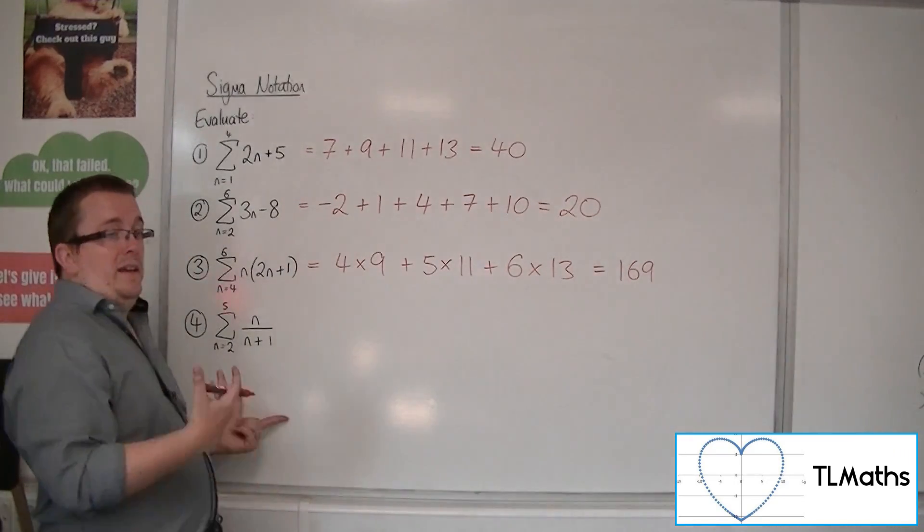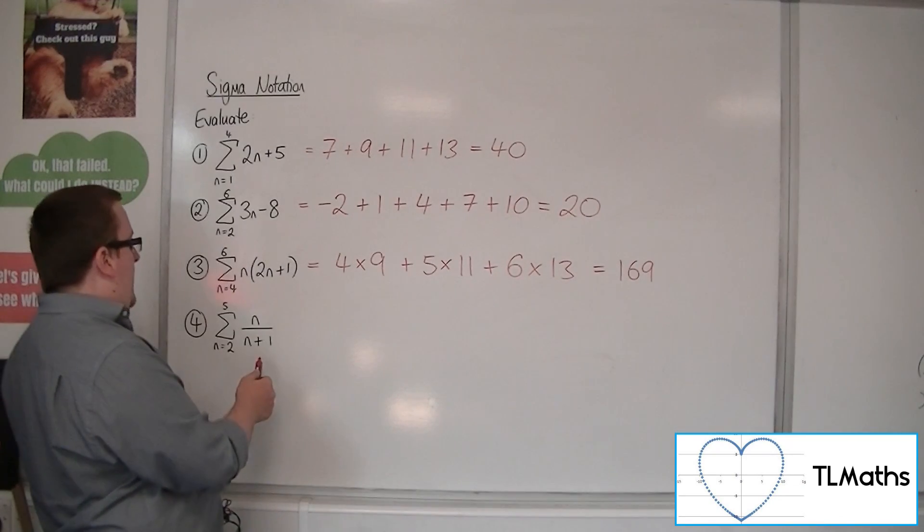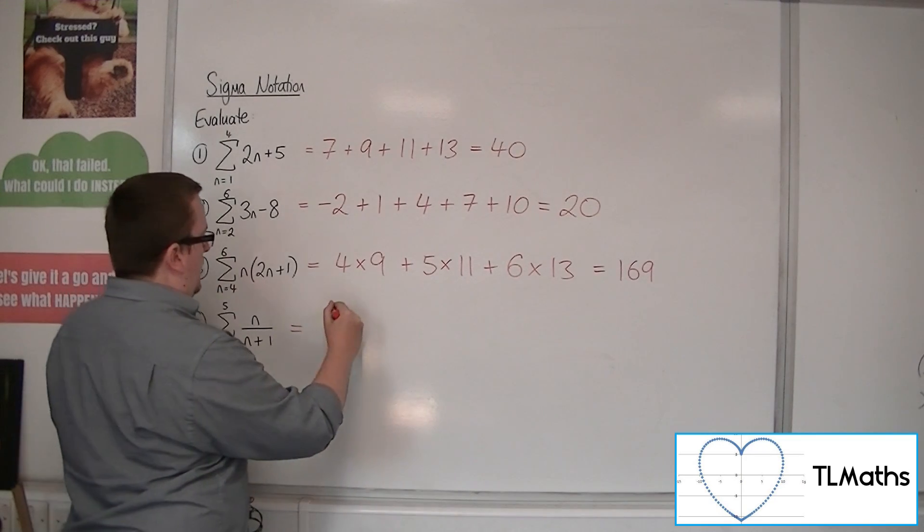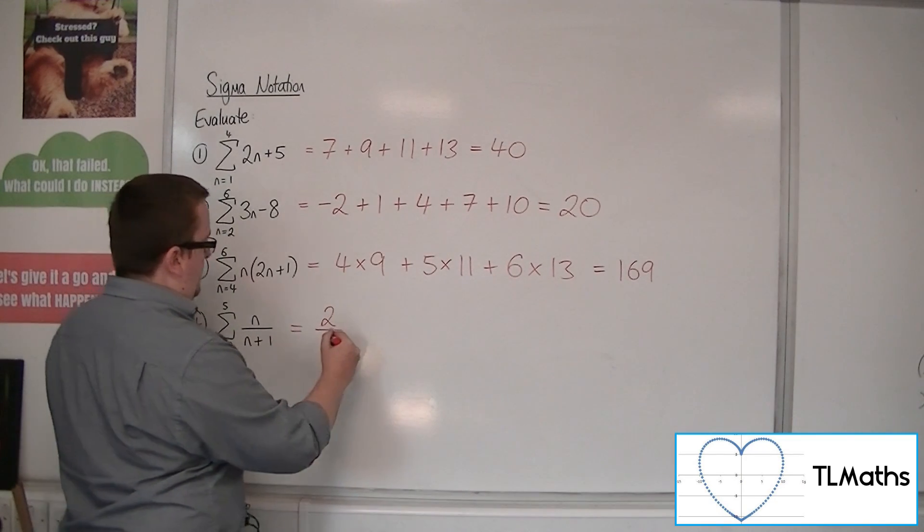And then finally, number 4, we are adding up n over n plus 1, from n is 2 to 5. So when n is 2, we get 2 over 2 plus 1, so 3.